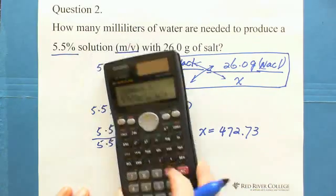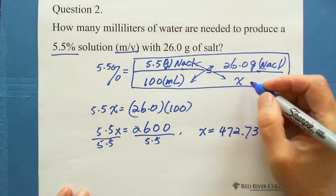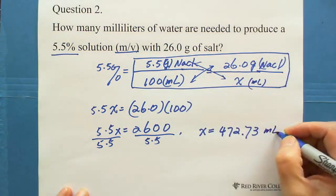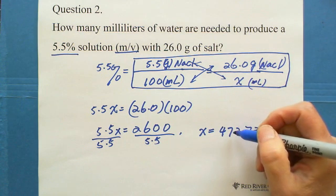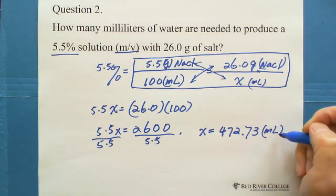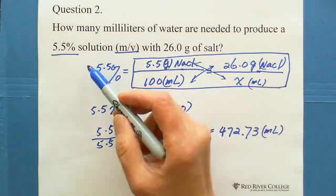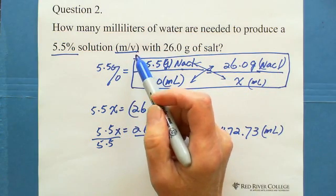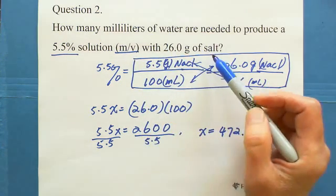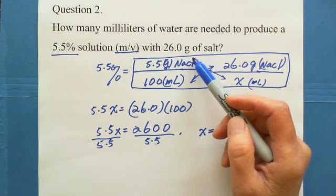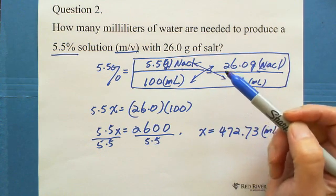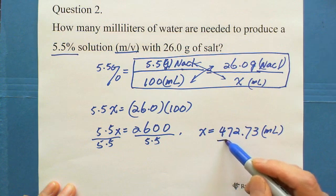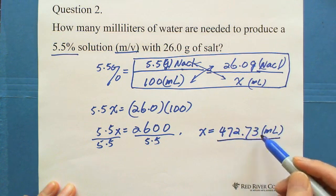The answer is 472.73 milliliters — the final volume of solution. So when preparing a 5.5% concentration solution with 26 grams of salt, you weigh 26 grams of salt, put it in a beaker, and add enough water to stir and make a final volume of 472.73 milliliters.